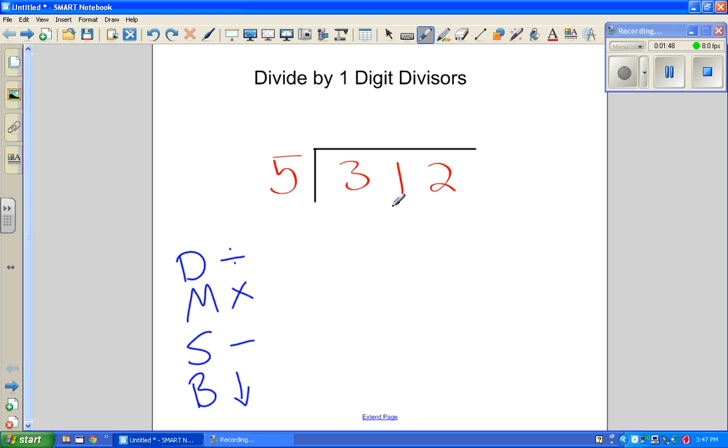Not exactly. There might be some left over, but it does fit. So we go how many times? 5, 10, 15, 20, 25, 30. If I go to 35, it's too much. So 30. And 5 times 6 is 30. So I write my answer up here. 5 goes into 31 six times. That was my divide.